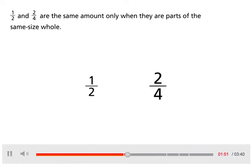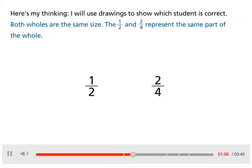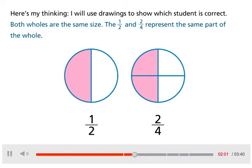One-half and two-fourths are the same amount only when they are parts of the same size whole. Here's my thinking. I will use drawings to show which student is correct. Both wholes are the same size. The one-half and two-fourths represent the same part of the whole.